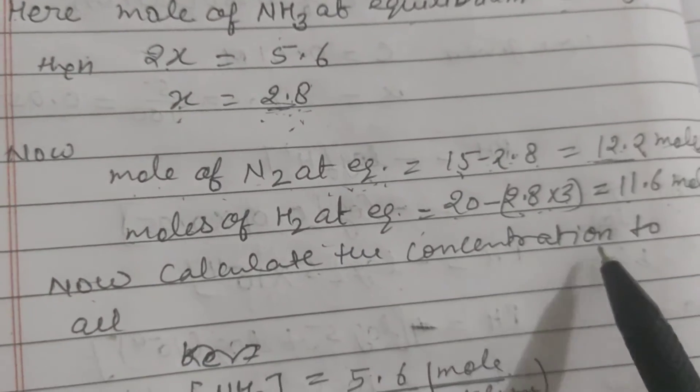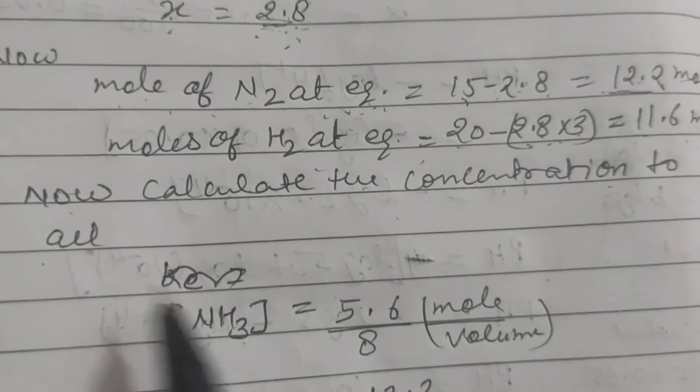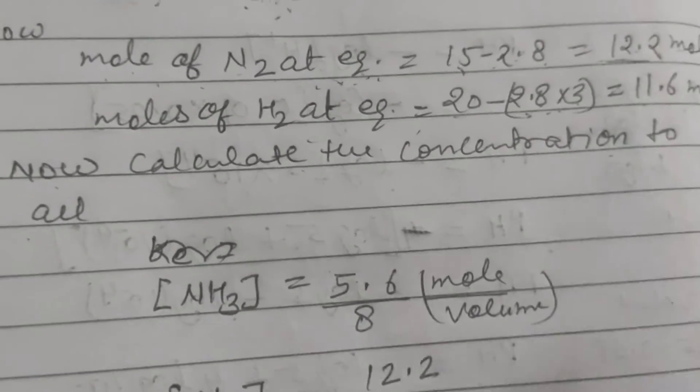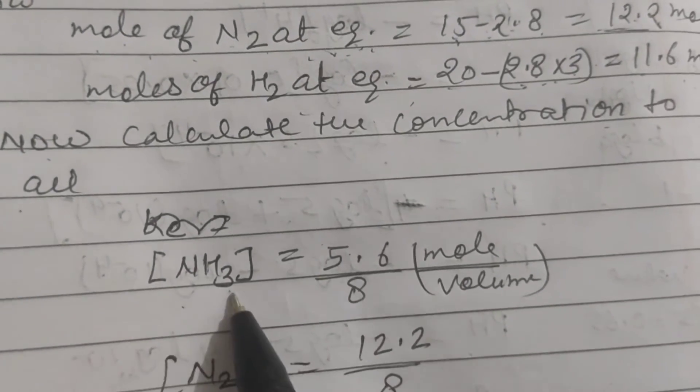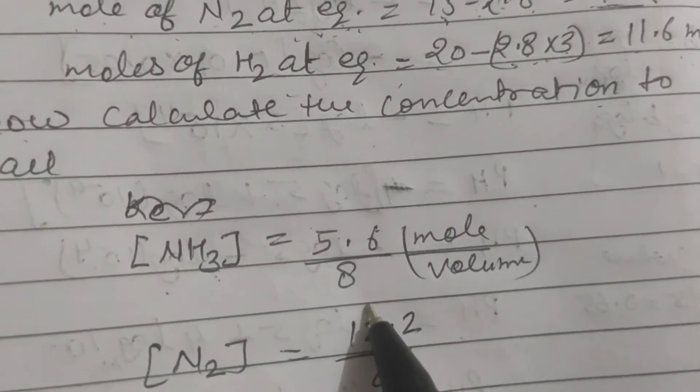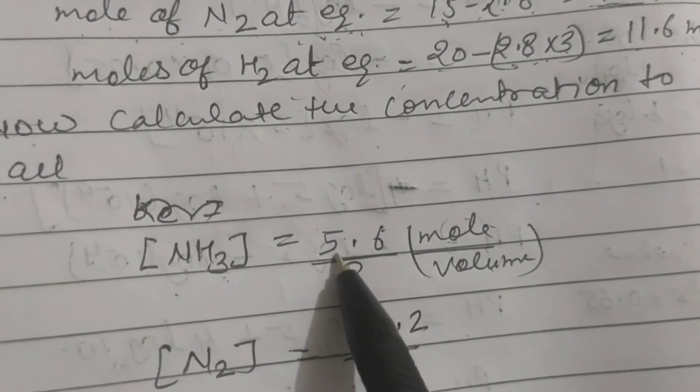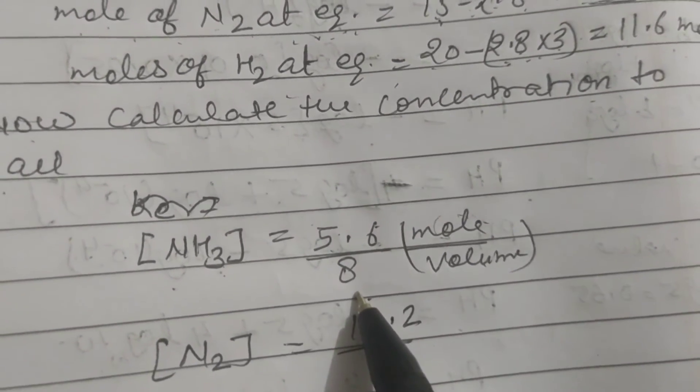Now calculate the concentration of each substance. First we have to calculate the concentration. Concentration equals to what? Number of moles upon volume. Here number of moles of ammonia is 5.6 and volume is 8.